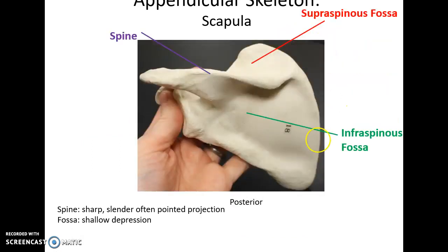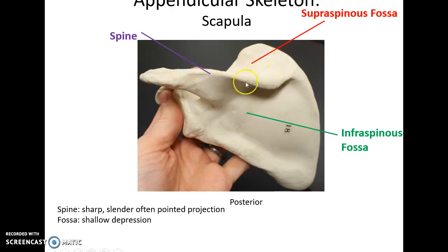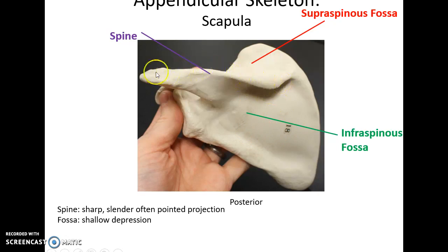Flip it over to the posterior view of the scapula. You have the supraspinous fossa, a nice smooth area, the spine — this long ridge on the posterior side of the scapula — and the infraspinous fossa. The spine ends with the acromion.